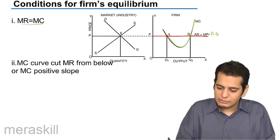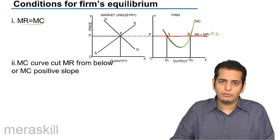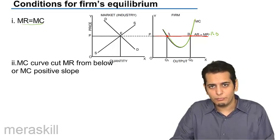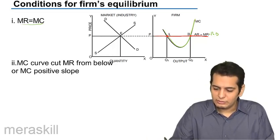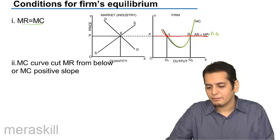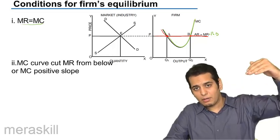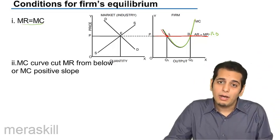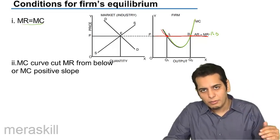Now let's consider point A. Is the marginal cost curve cutting the marginal revenue curve from below, or is it cutting it from above? At point A, the marginal cost curve starts from above and meets the MR curve at point A. So it cuts the MR curve from above — it is not cutting the MR curve from below.